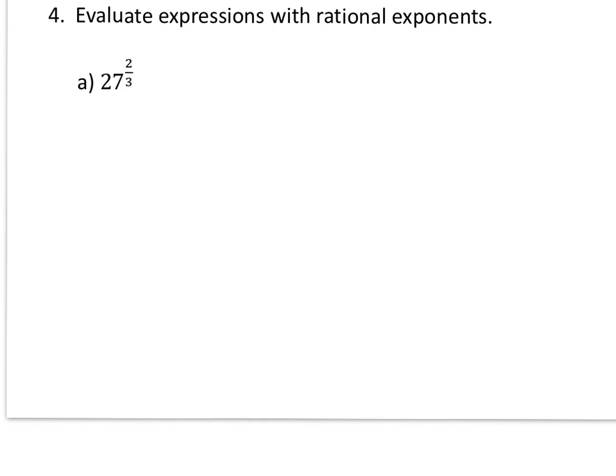To evaluate this expression, let's change the rational exponent into a radical expression. Remember that the numerator is the exponent and the denominator is the index number. So let's rewrite it — that'll be the third root of 27 raised to the second power.